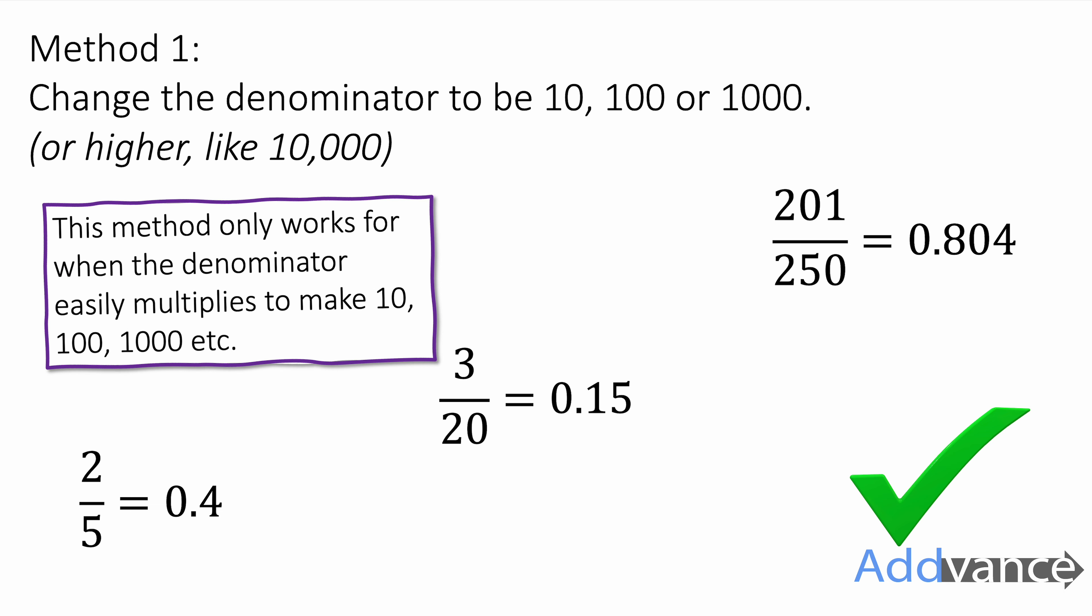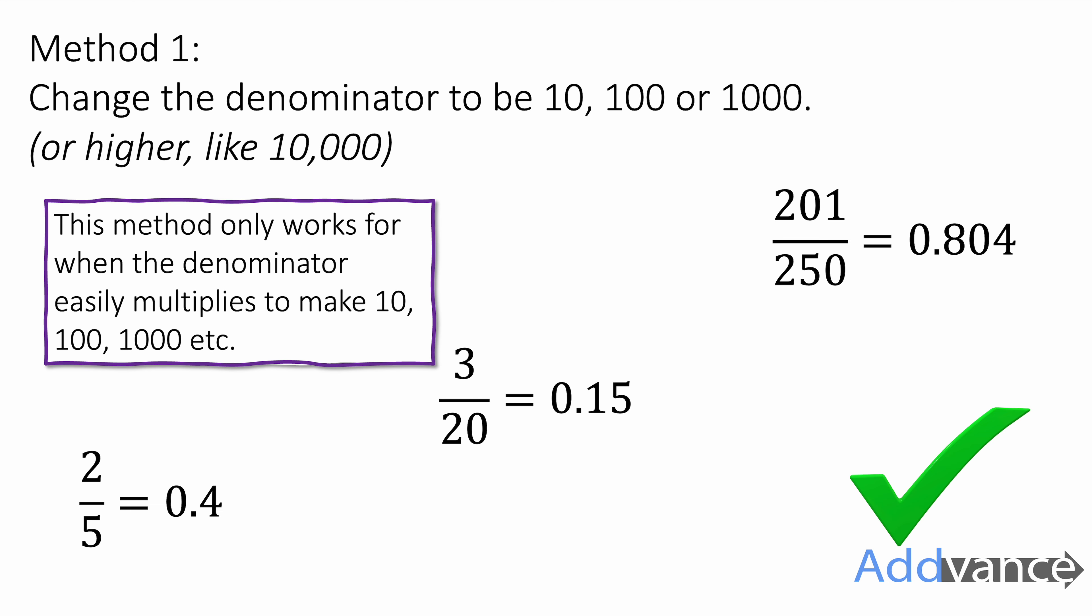Now note this only works when we've got easy denominators. Denominators like 5, 20, or 250 multiply really easily to make ten, hundred, or a thousand. If you don't have a nice denominator, you have to use a second method, and that is the method we're going to look at now.